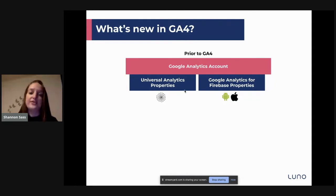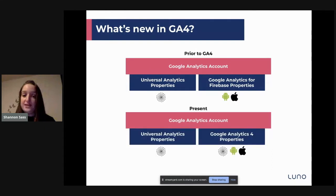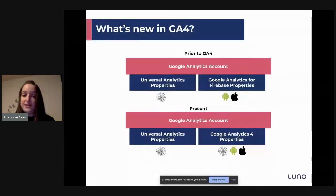For Universal Analytics, it's the traditional one that most people have been using and know about. And then you also have Google Analytics for Firebase properties, which is for your app data. Before, there was no easy way to combine your web data streams and your app data streams, and this made reporting quite difficult for analysts. Now we have Google Analytics 4 properties, which has replaced Google Analytics for Firebase, and it is the future of Google Analytics.